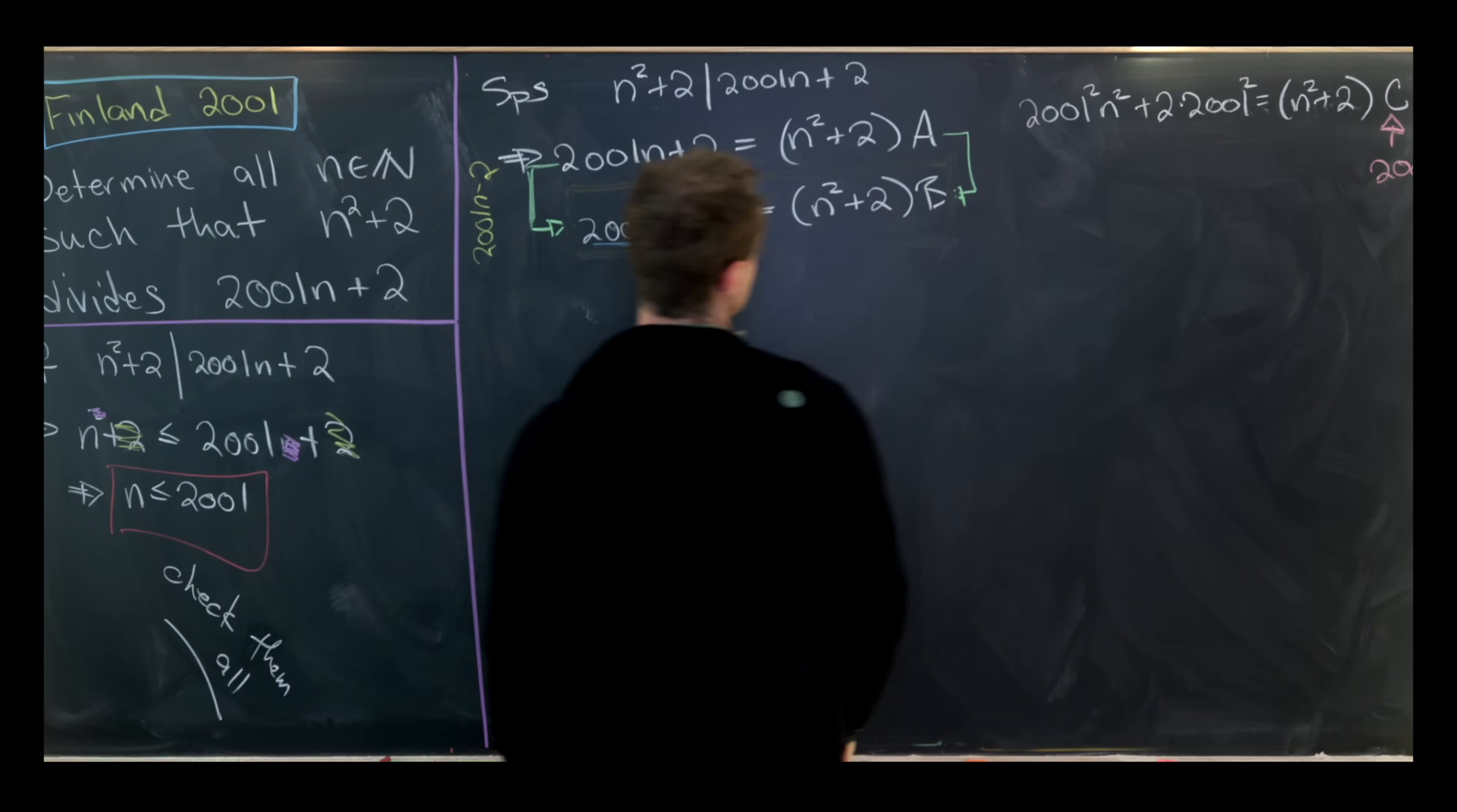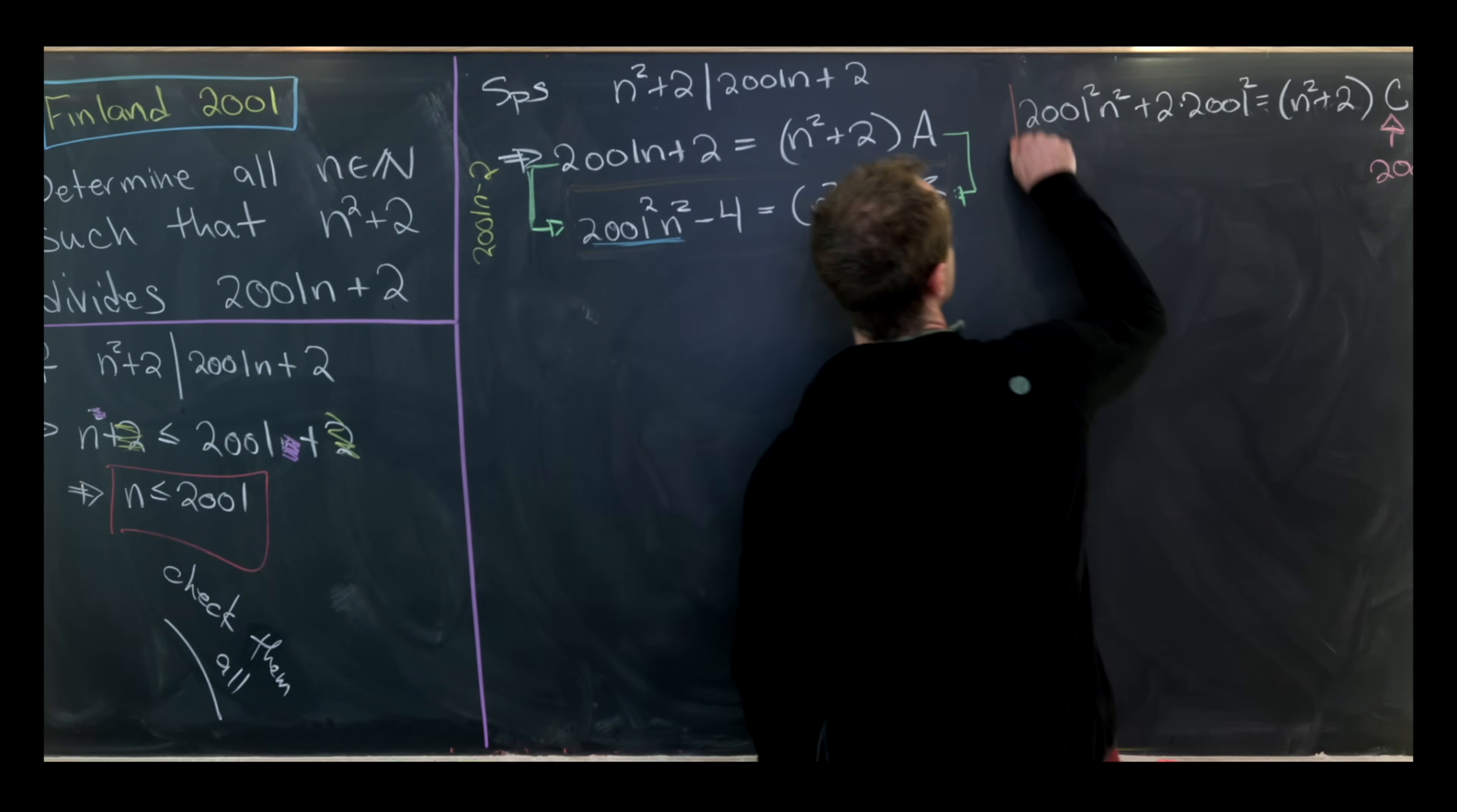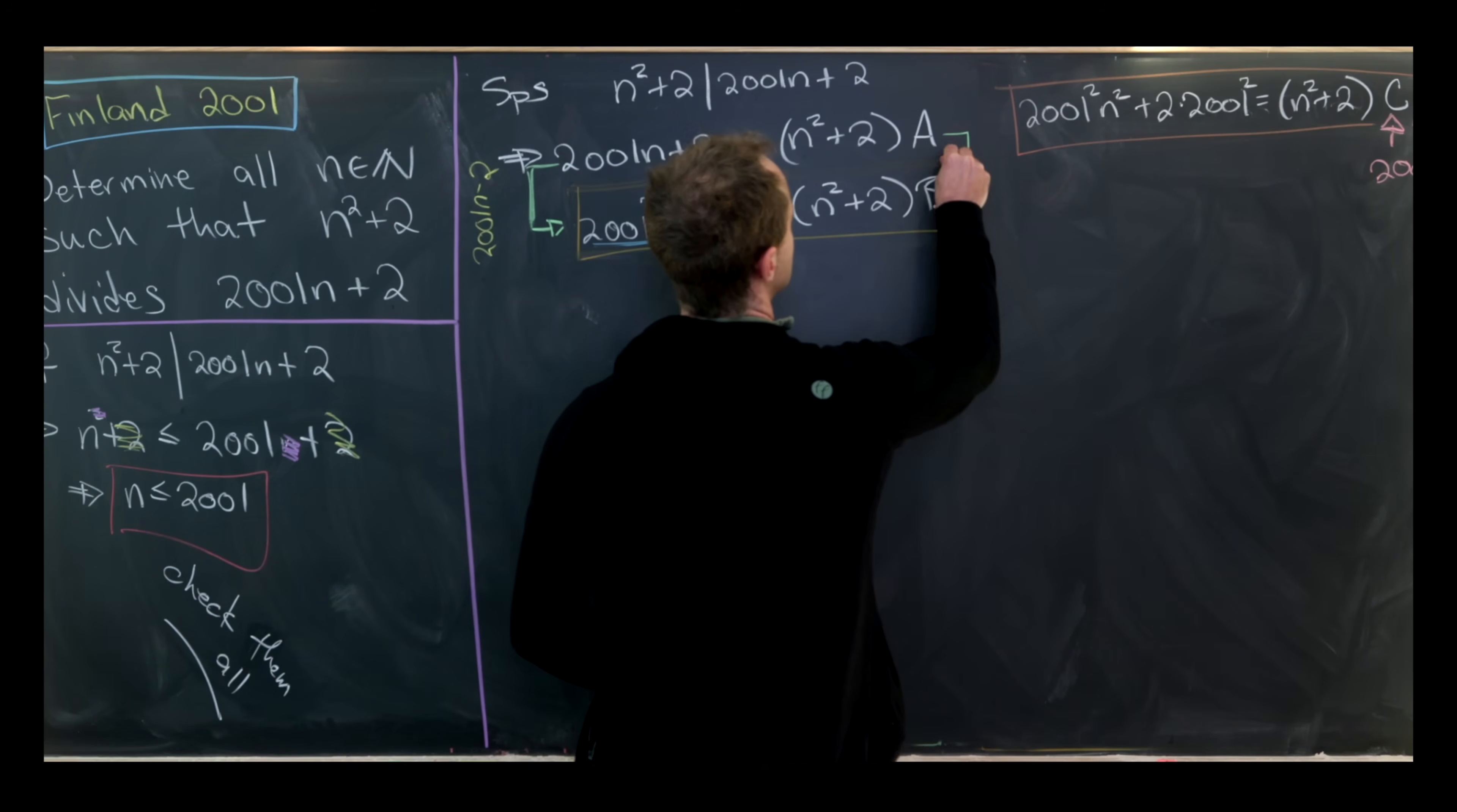But I'll name 2001² just C because I won't need the fact that it's equal to 2001². Now let's box these two equations. I've got this one right here which I'm boxing in brown and this one right here which I'm boxing in orange.